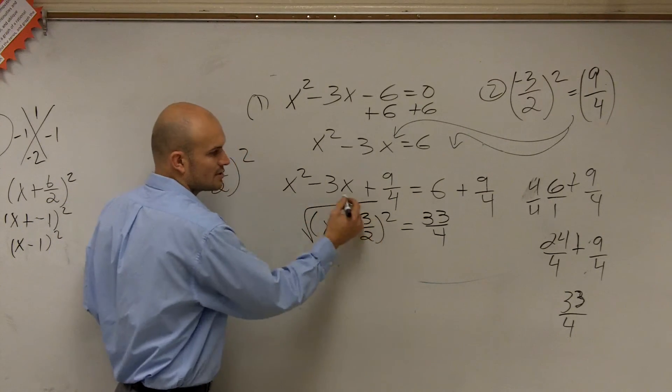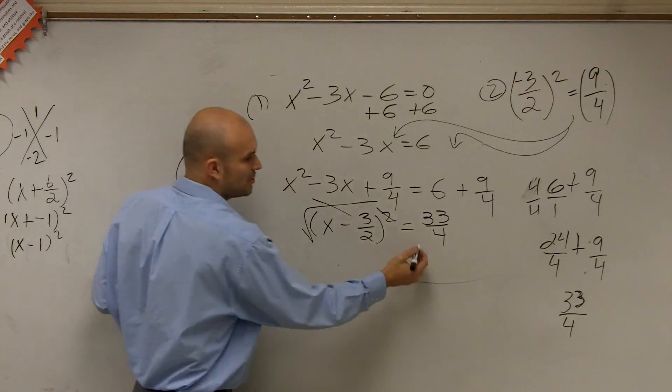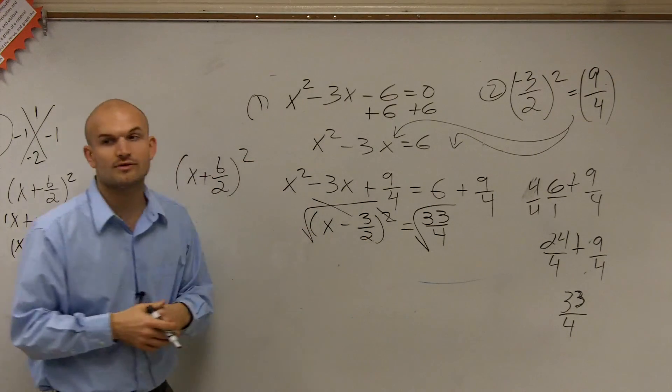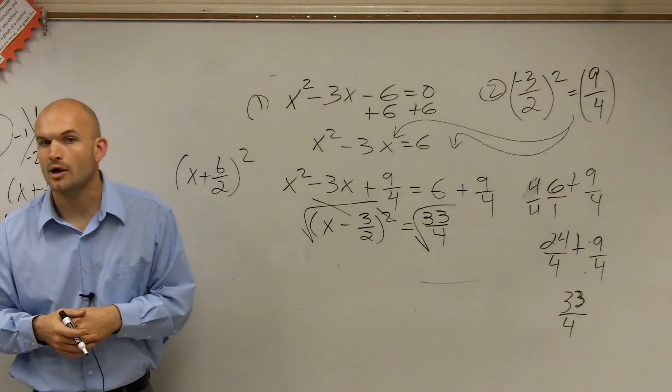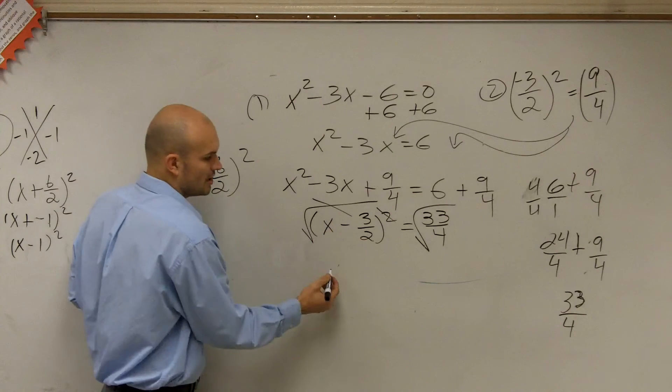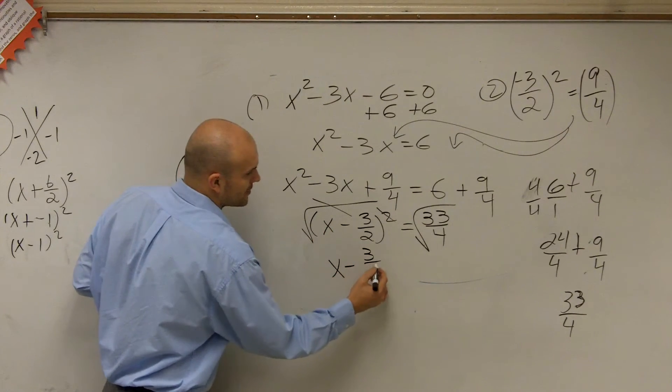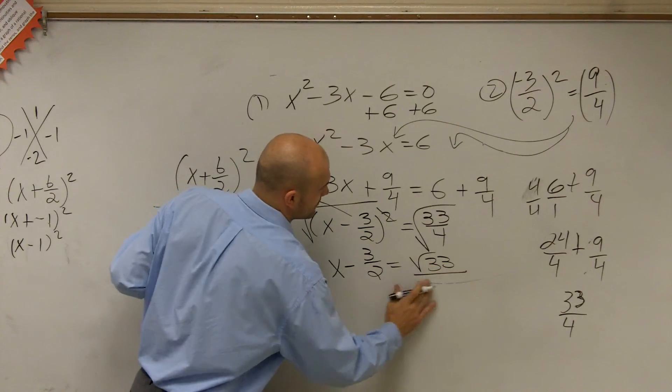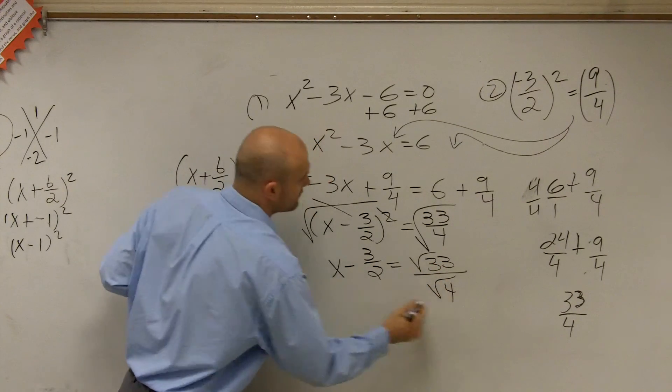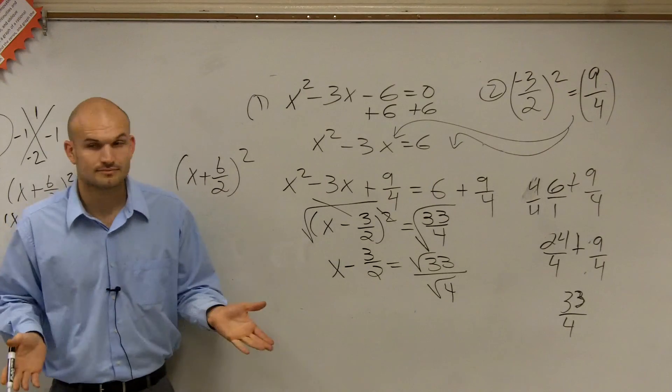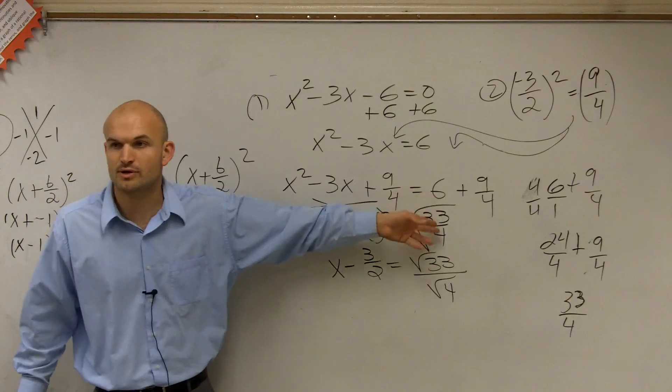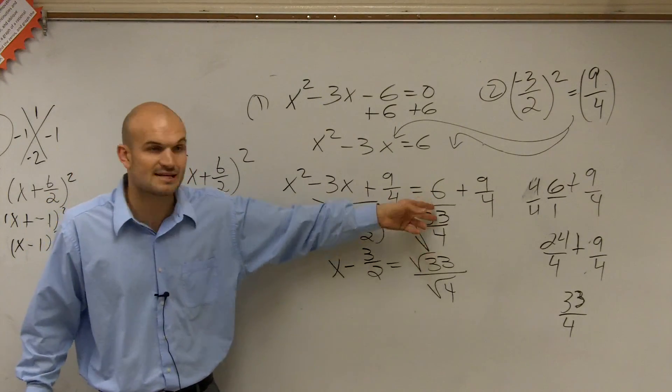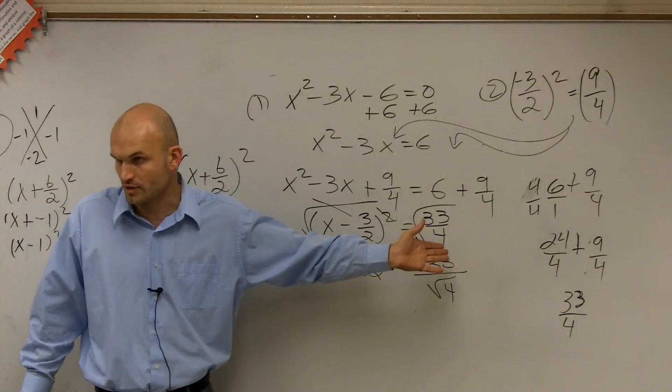So you take the square root to undo the square on both sides. And then you do the square root on the right side. Therefore, since you undid that, now I have x minus 3 halves equals the square root of 33 over the square root of 4. The square root of 33 over 4 is the same thing as the square root of 33 over the square root of 4.